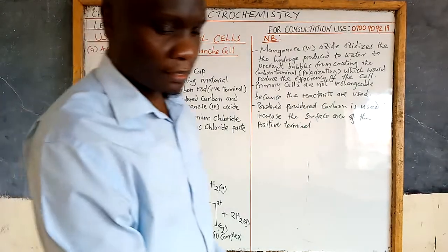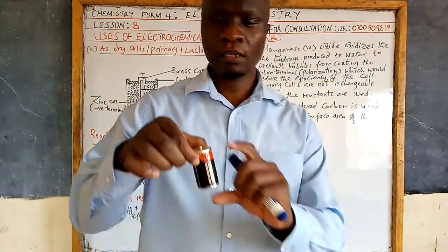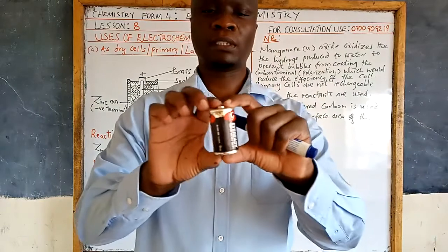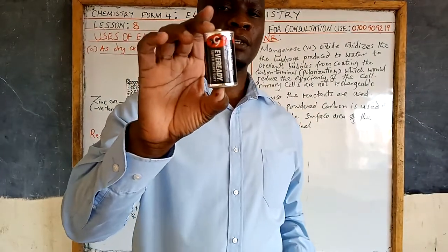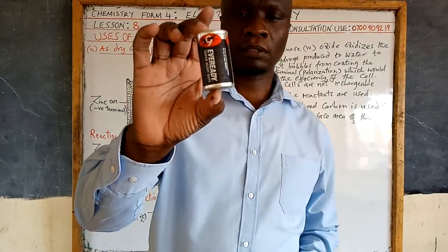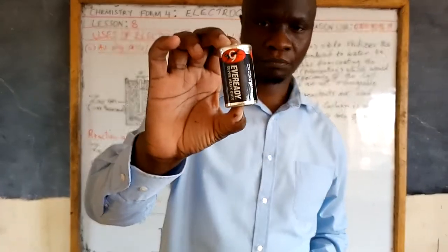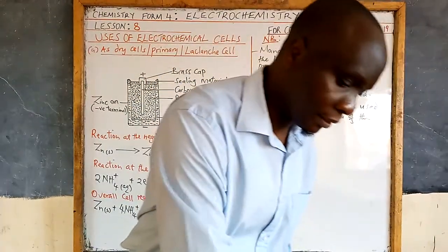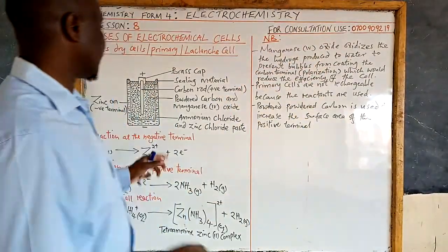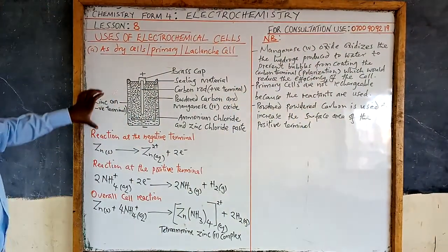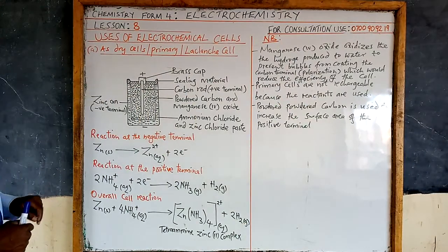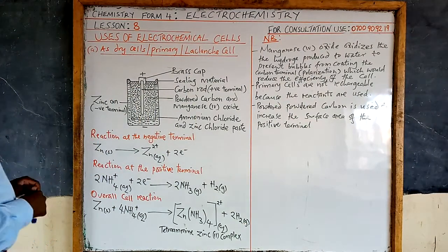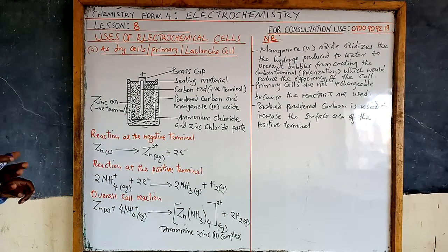I have a sample here of a cell. So this is what we call the dry cell. This is now the structure. We have to look at the internal parts. It is composed of three important parts.